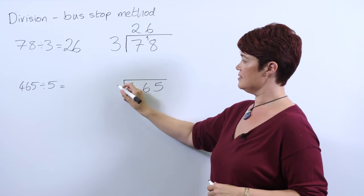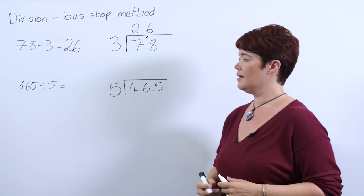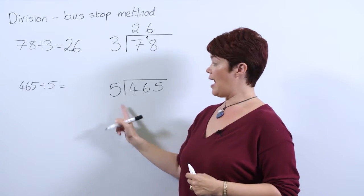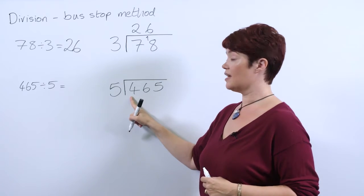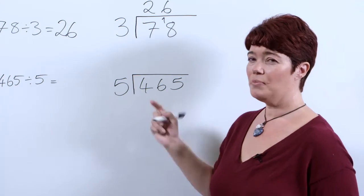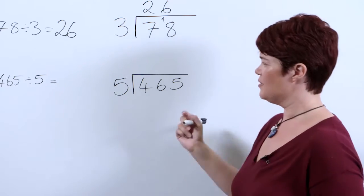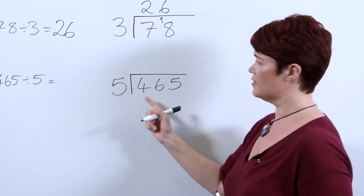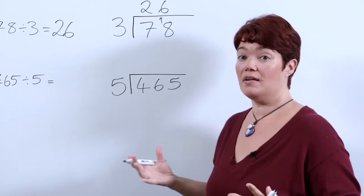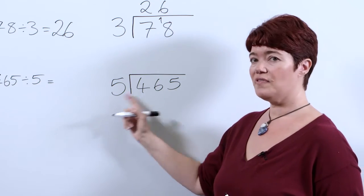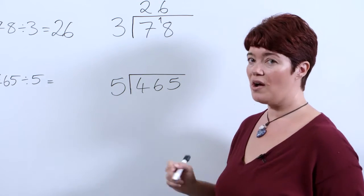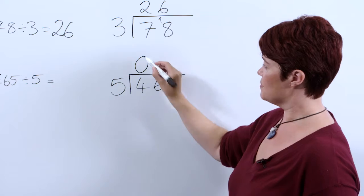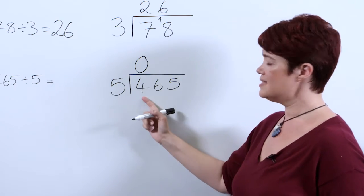Thinking how many groups of 5 can we make out of 4? Pupils really struggle with this, and you'll tend to find some of them will mix them around and put a 1 here because they can't do it. How many groups of 5 can we make from 4? We can't. None. We must make sure we put our 0 there. This is the hundreds.